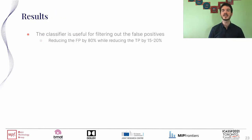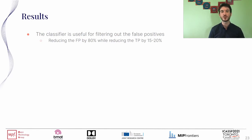Now the results. Here I will only give a quick summary, but you can check our paper for the details. First of all, we saw that the classifier is pretty useful. It can reduce the number of false positives by 80%, while reducing the number of true positives by only 15 to 20%. Therefore, for having a clean final report, it can be pretty valuable.